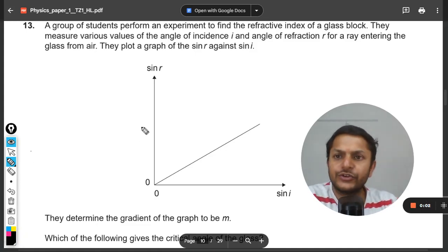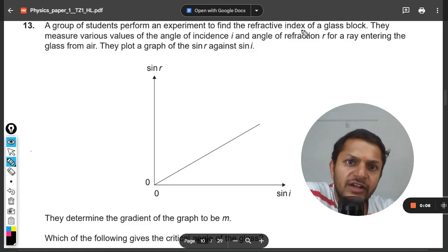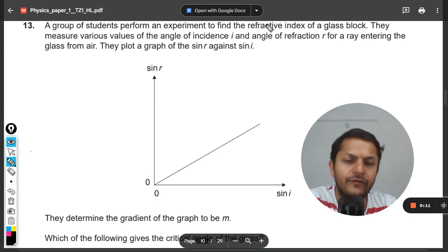Students, let us see what is there in this question. A group of students perform an experiment to find the refractive index of a glass block. They measure various values of the angle of incidence i and the angle of refraction r for a ray entering the glass from air.